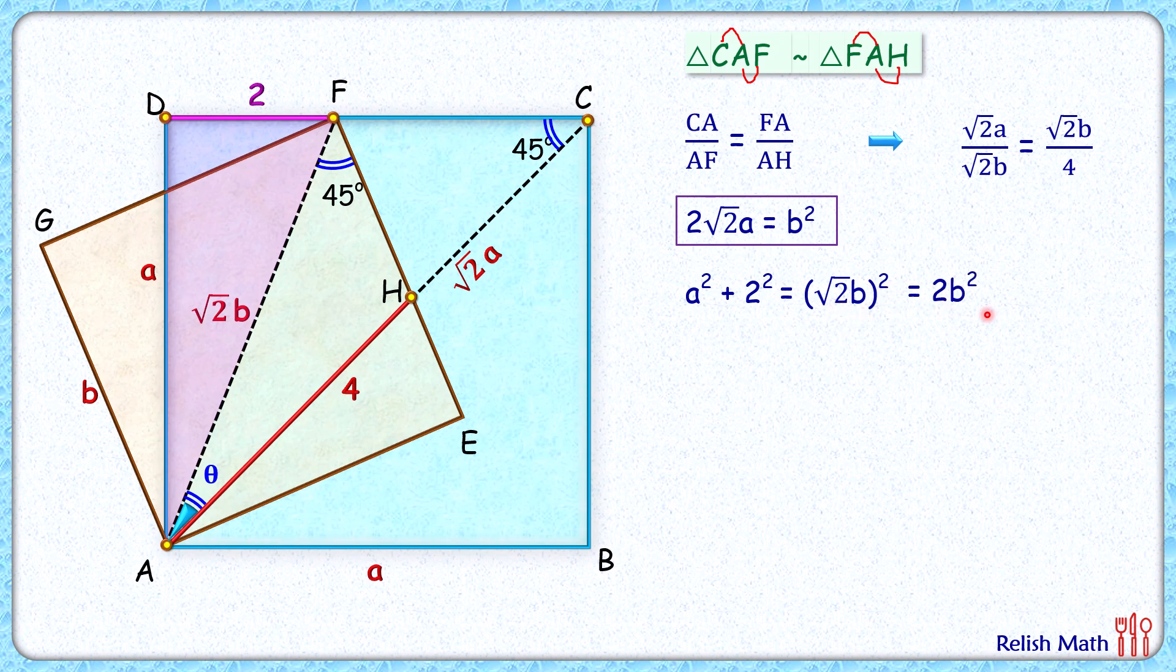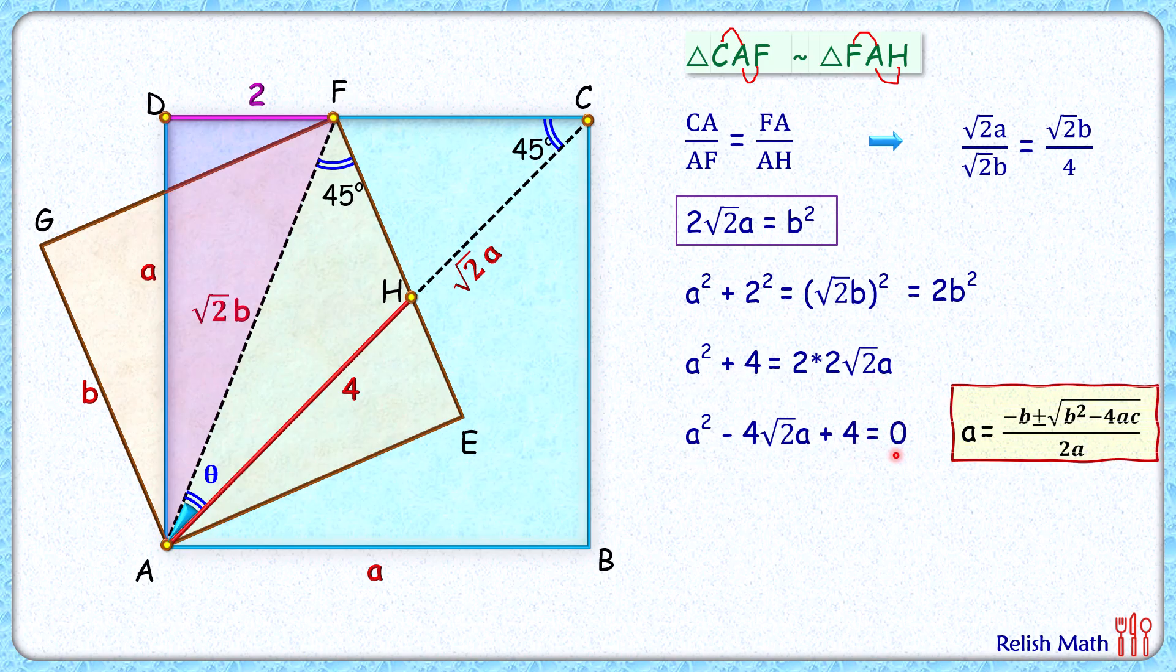Now again, this b squared value we can put here in the right-hand side. So we'll get a squared plus 4 equals 2 times 2 root 2a. Taking everything in the left-hand side, we'll get a quadratic in terms of a. Solving it by quadratic formula, we'll get the value of a as 2 root 2 plus 2 centimeters.